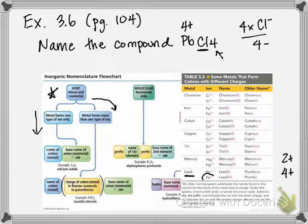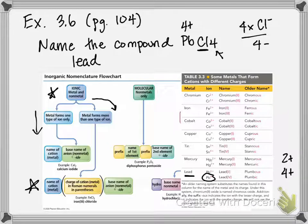So lead is in the 4+ ion state. Now that we have established this, we can go about naming the compound. Looking at our flowchart, it's the name of the cation — the metal — so it's going to be lead. Then we indicate what charge it is by writing the charge in Roman numerals. Since this is lead 4+, the Roman numeral for 4 is IV.